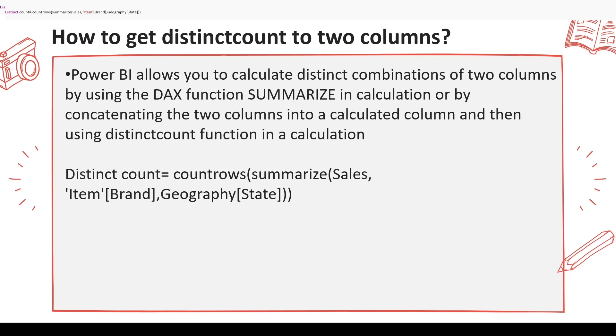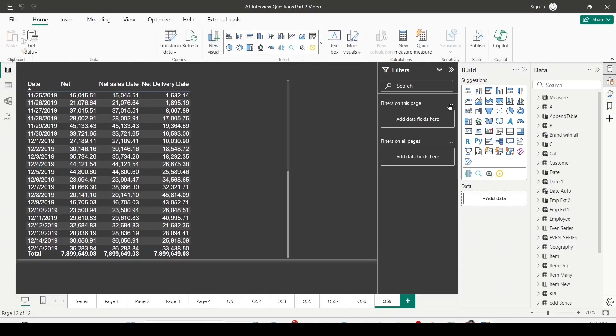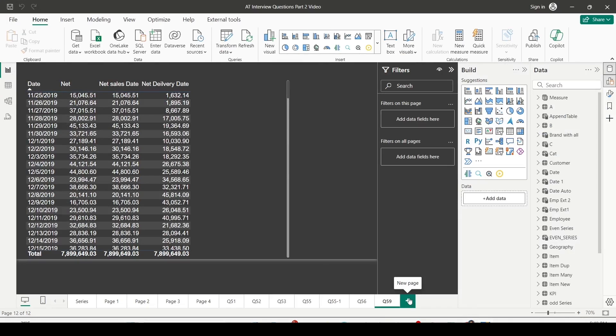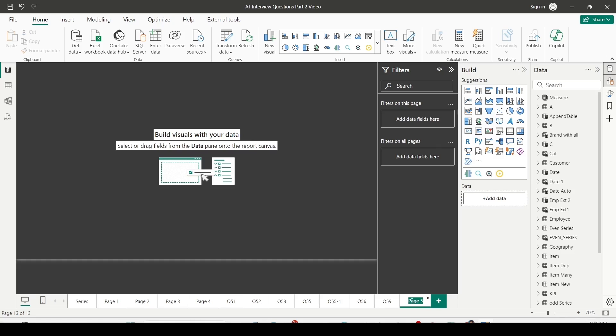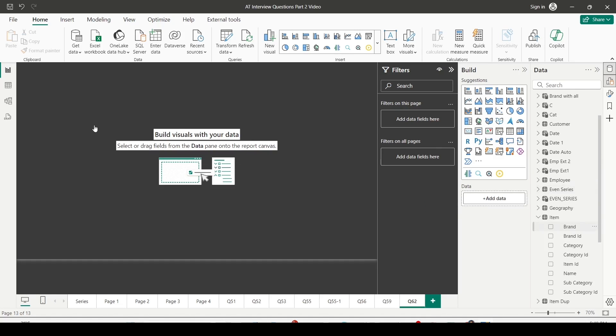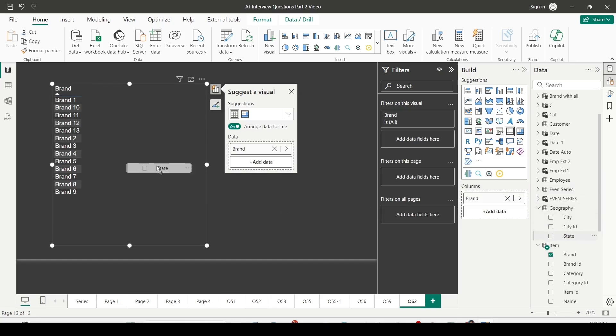Now let's see this in action on Power BI Desktop. I'm on Power BI Desktop now. Here I'm going to add a new tab. This new tab I'm going to call Q62 - Question 62.